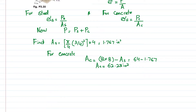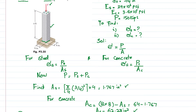We now have A_s and A_c, but we do not know P_c and P_s. Due to the compressive load P, the deformation in the concrete equals the deformation in the steel — both deformations will be the same, since the post deforms together.